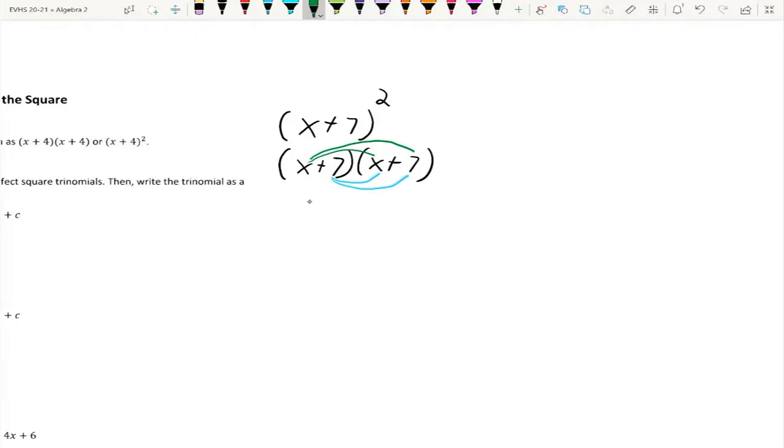So x times x is x², x times 7 is +7x. Then we jump to the ones on bottom, 7 times x is 7x, 7 times 7 is 49. Now this happens every single time that I do one of these perfect squares. This middle term ends up being doubled and it's the exact same term. So whenever I simplify this down, I get x² + 14x + 49.